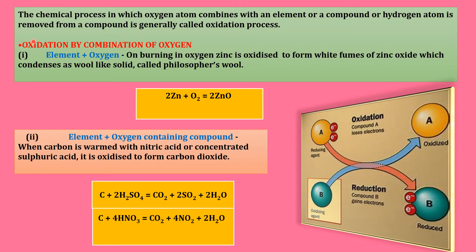First, I have to define oxidation. What is oxidation? The chemical process in which an oxygen atom combines with an element or a compound, or a hydrogen atom is removed from a compound, is generally called the oxidation process. There are three conditions for an oxidation process: first, oxygen atom combines with an element; second, oxygen atom combines with a compound; and third, hydrogen atom is removed from a compound. If any of these three conditions happen, then you can say it's an oxidation process.